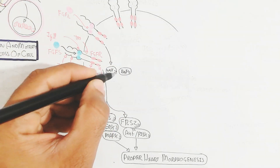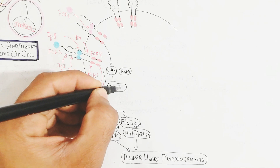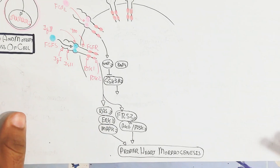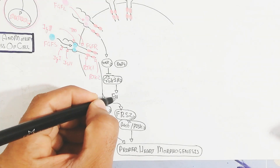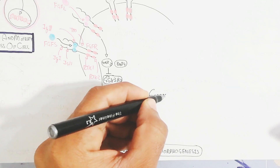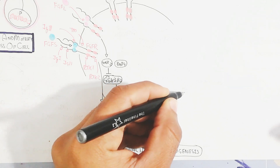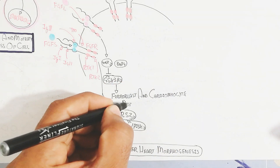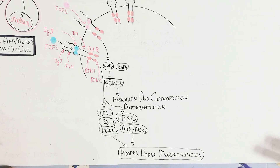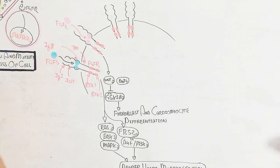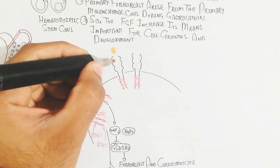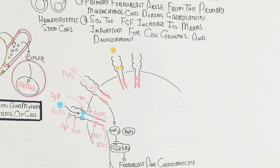The Wnt pathway activates BMP4 protein, and Wnt inhibits glycogen synthase kinase 3-beta (GSK3β). GSK3β is responsible for fibroblast and cardiomyocyte differentiation, so its inhibition suppresses that differentiation.